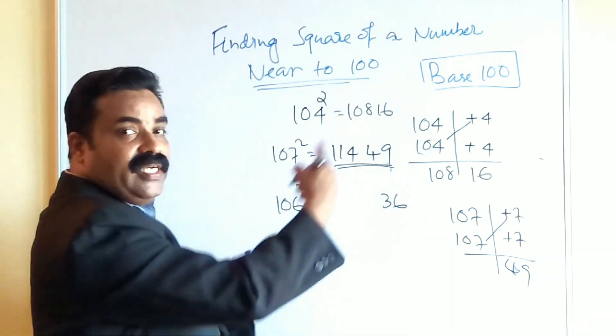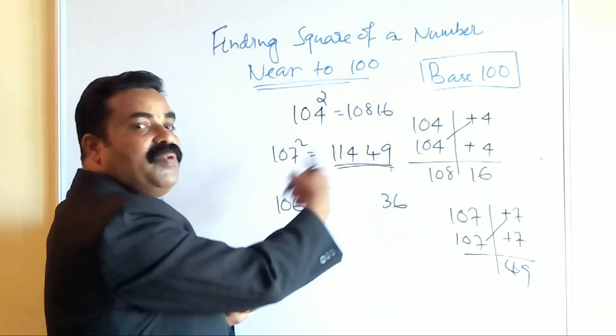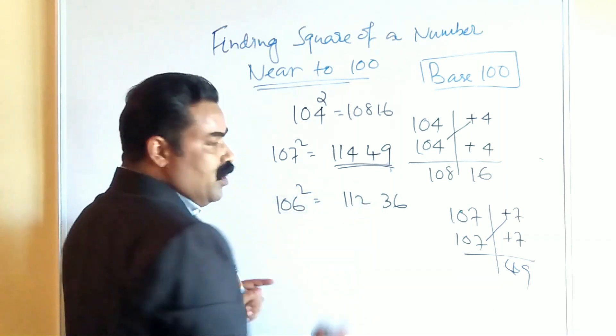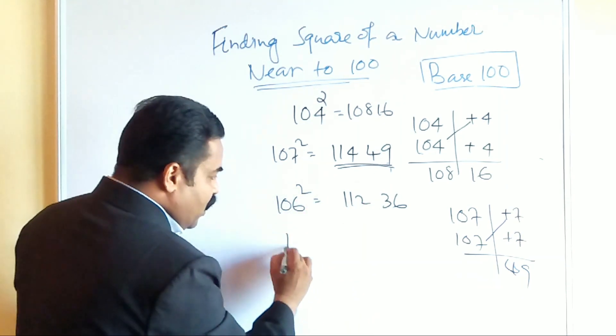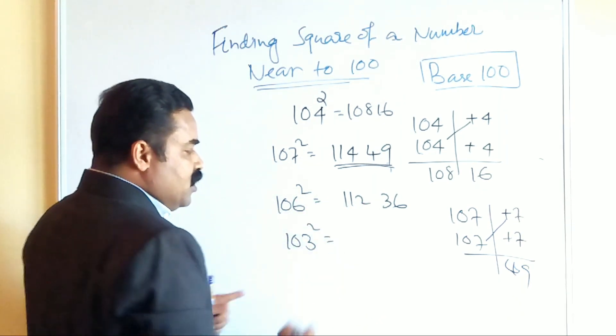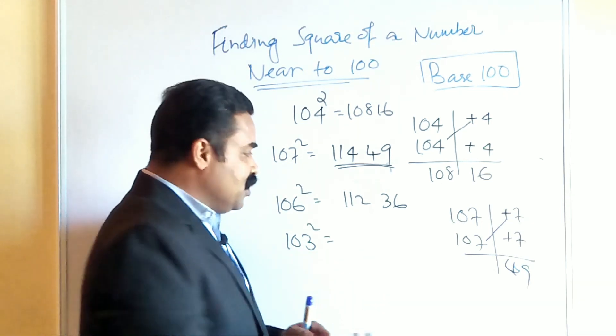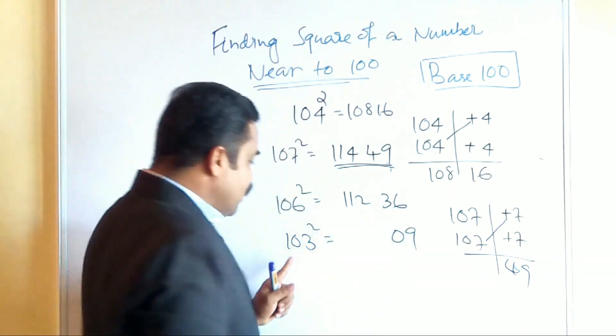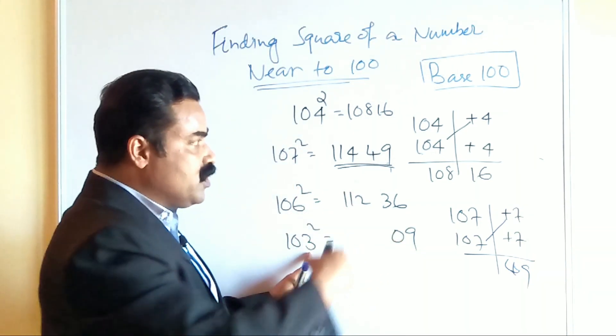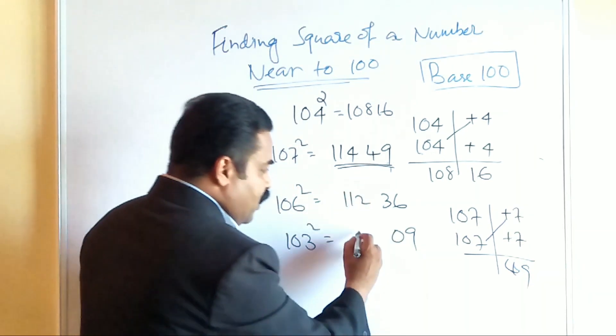You want to find out the square of 103. 103 square. So 3 square will become what? 9. But remember we have to write it as a two digit number, so 09. And 103 addition, cross addition, 103 plus 3 is 106.